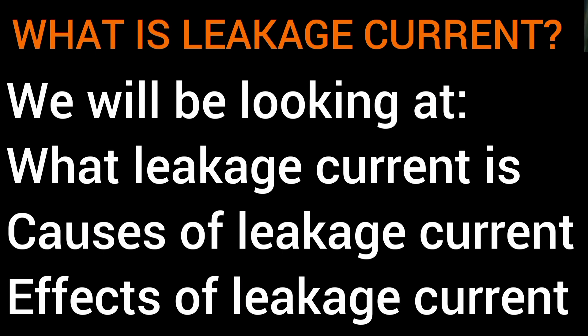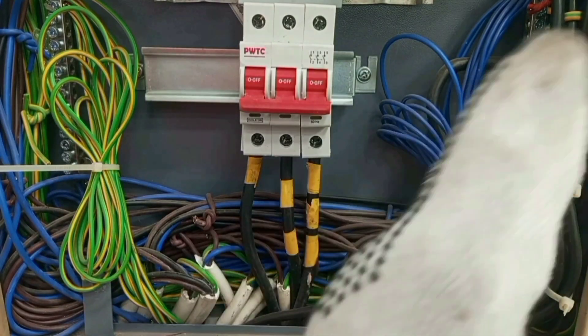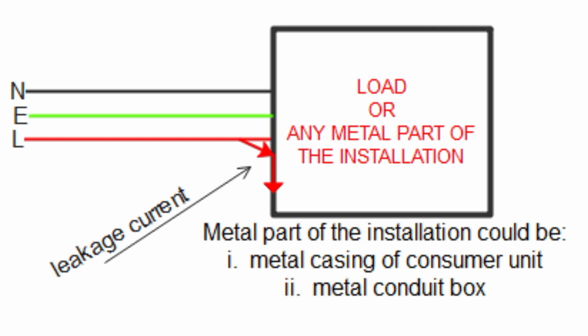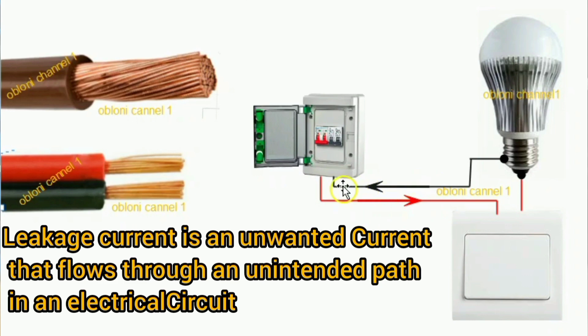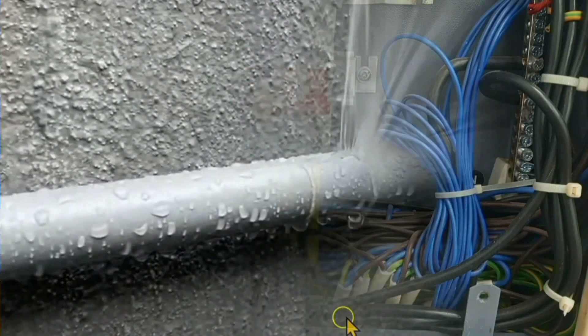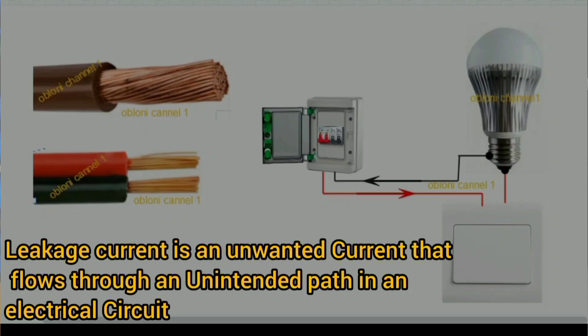In this particular video, I'll be addressing the question: what is leakage current? I'll go further to explain the causes of leakage current and then the effects of leakage current. Leakage current is a combination of two words — leakage and current. When we talk of leakage current, we talk of current that is leaking, or an unwanted current that flows through an unintended path in an electrical circuit. For better understanding, I'll first use the water pipe analogy to explain, and then I'll move on to use the electrical cable to explain.